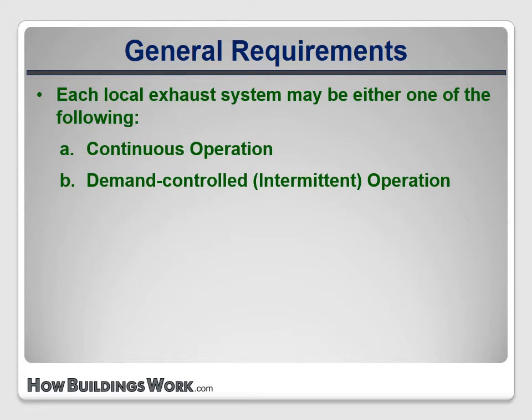One case where a continuous system might be used in a single-family house is if a balanced system like a heat recovery ventilator is installed for fresh air. These are slowly becoming more common and I'll come back to them later in the course. Demand-controlled systems are much more common and are often also called intermittent systems.